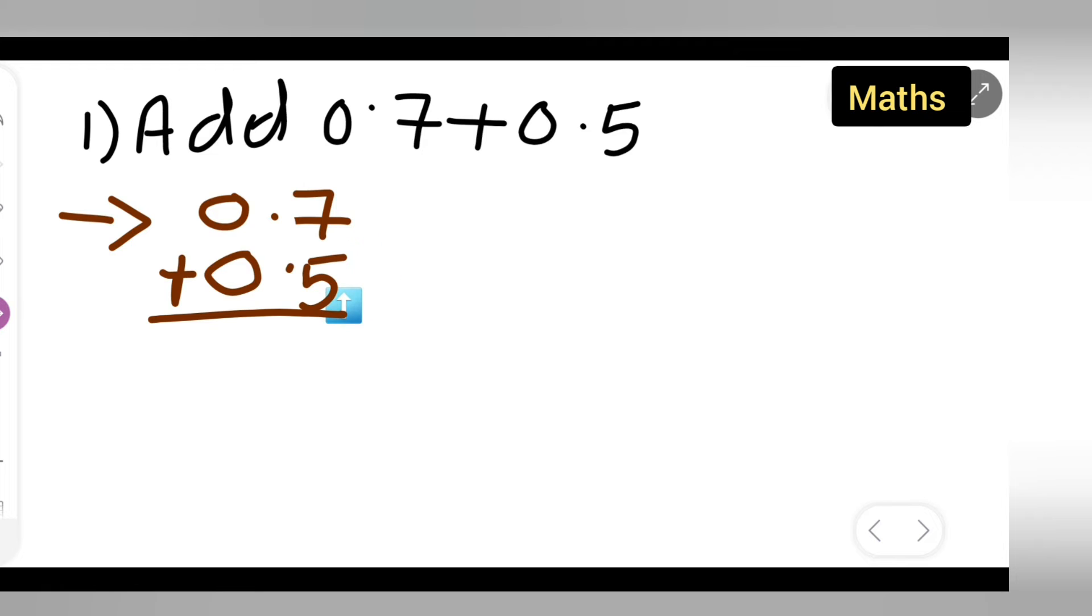7 plus 5 will give you 12, so you'll have to write down 12. Carry 1, write down 12 over here.